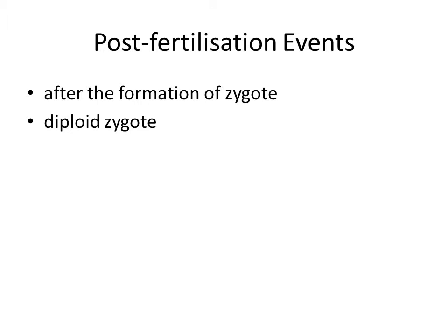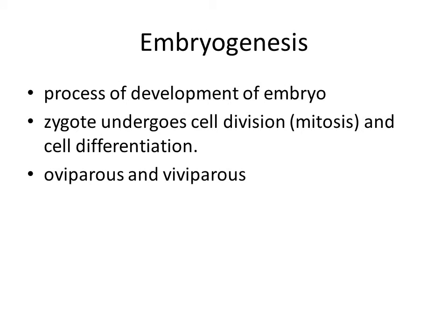Events in sexual reproduction after the formation of the zygote are called post-fertilization events. Formation of the diploid zygote is universal in sexually reproducing organisms. In organisms with external fertilization, the zygote is formed in the external medium, usually water, whereas in those exhibiting internal fertilization, the zygote is formed inside the body of the organism. Further development of the zygote depends on the type of life cycle the organism has and the environment it is exposed to. Embryogenesis refers to the process of development of the embryo from the zygote. During embryogenesis, the zygote undergoes cell division (mitosis) and cell differentiation. Cell division increases the number of cells in the developing embryo, while cell differentiation helps groups of cells undergo modifications to form specialized tissues and organs.